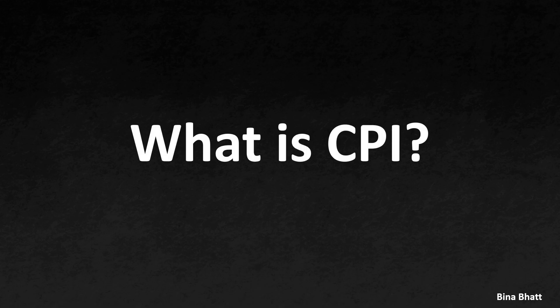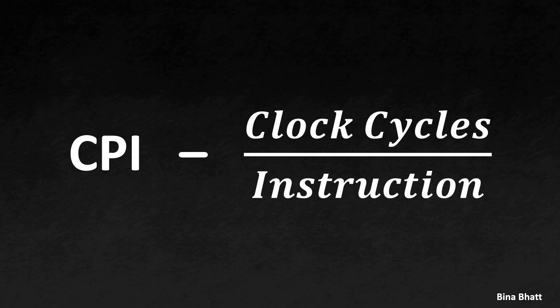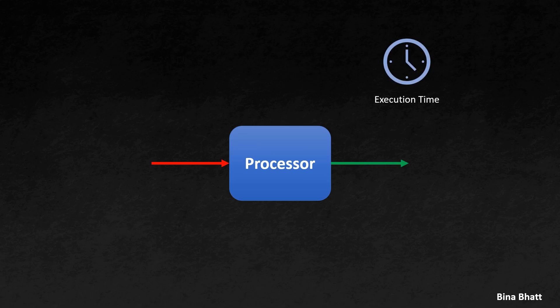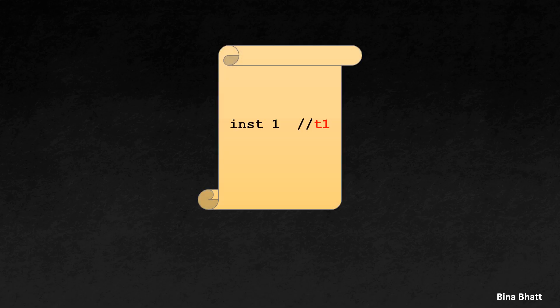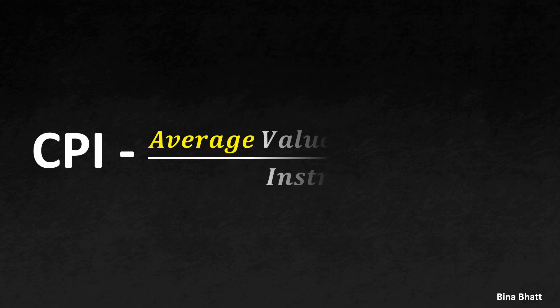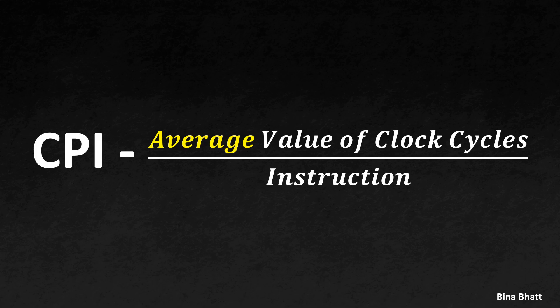What is CPI? CPI stands for clock cycle per instruction. This is nothing but the time it takes for a processor to execute one instruction. Now, different instructions take different amounts of time depending on what they do. So CPI gives us an average value of clock cycles that are required to execute one instruction on a processor.